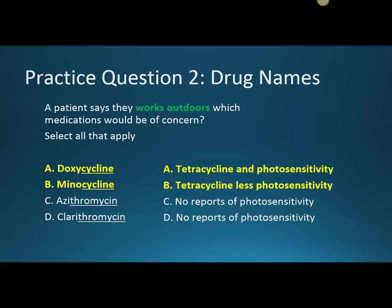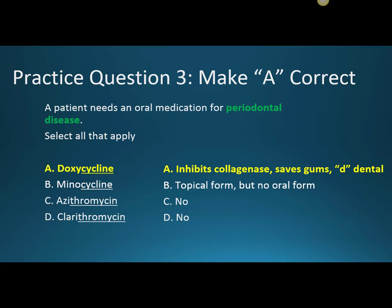Now let's make answer A correct: a patient needs an oral medication for periodontal disease. Doxycycline is the answer. It inhibits an enzyme called collagenase, saving the gums by stopping collagenase from breaking down connective tissue. To remember this, think 'D for dental.' Minocycline does have a topical form for another dental condition, but no oral form for this indication. Azithromycin and clarithromycin have no periodontal indications.